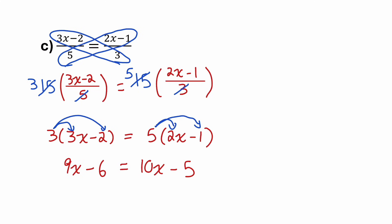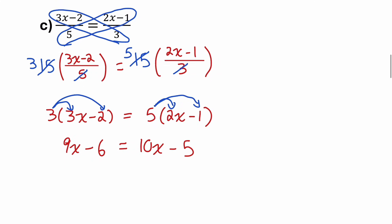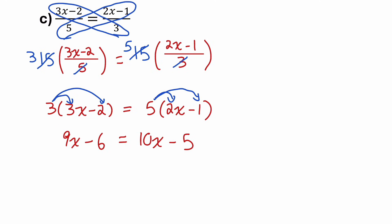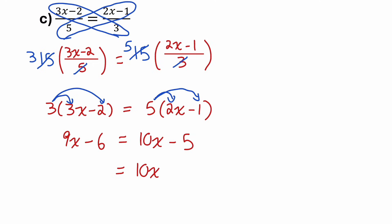Now I'll rearrange this equation to get the variable terms on the same side and the constant terms on the other side. My variable terms are 9x and 10x — let's get them both on the right side. The 10x is already on the right, so I'll leave it. I can bring this 9x to the other side by changing its sign, making it a negative 9x.